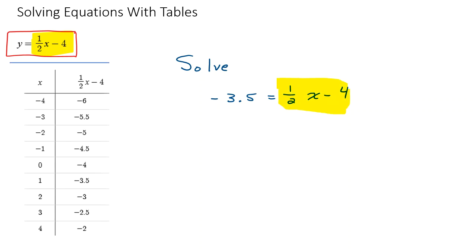I can only use the table for y equals one-half x minus four to solve an equation that is in the form something equals one-half x minus four. So in this case that something is negative 3.5. These are my y values here. These are my y values in this column, this second column.